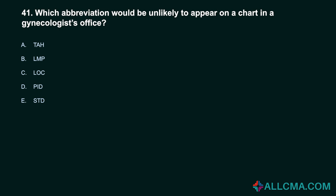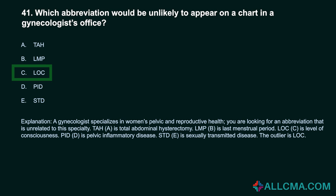Question 41: Which abbreviation would be unlikely to appear on a chart in a gynecologist's office? A. TAH. B. LMP. C. LOC. D. PID. E. STD. Correct answer: C. LOC. A gynecologist specializes in women's pelvic and reproductive health. TAH is total abdominal hysterectomy. LMP is last menstrual period. LOC is level of consciousness. PID is pelvic inflammatory disease. STD is sexually transmitted disease. The outlier is LOC.